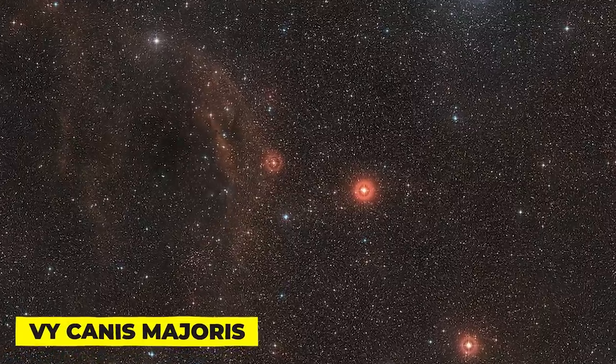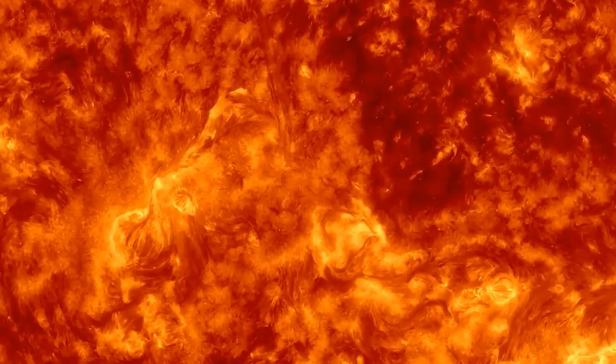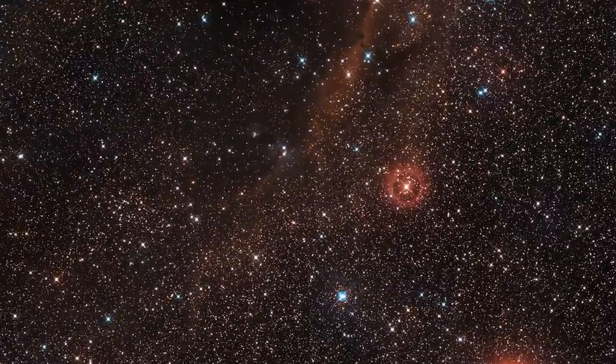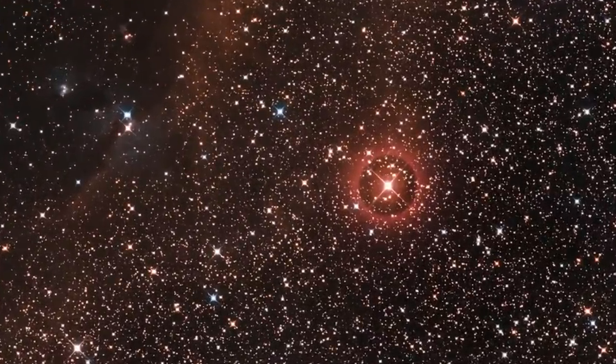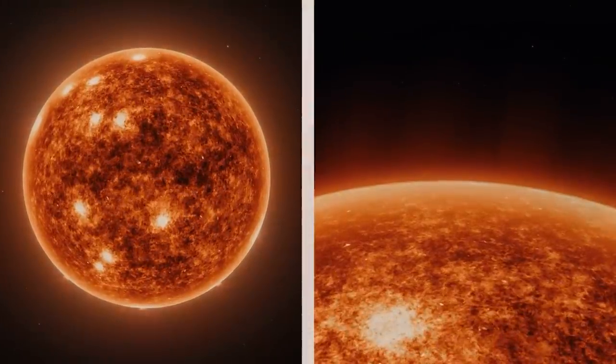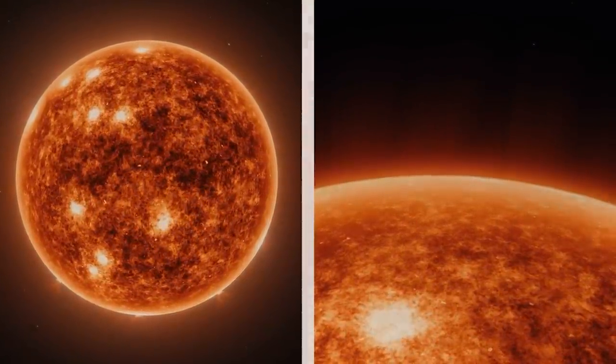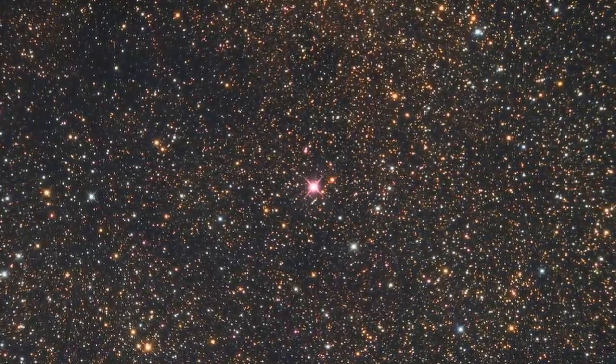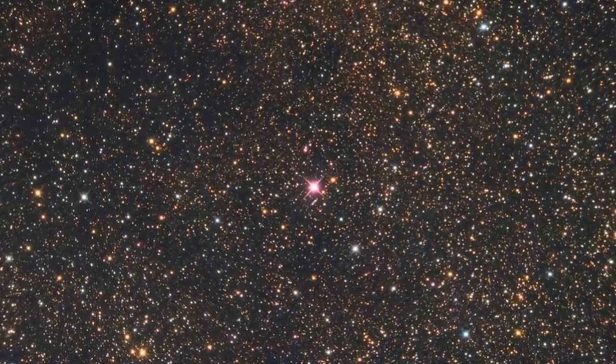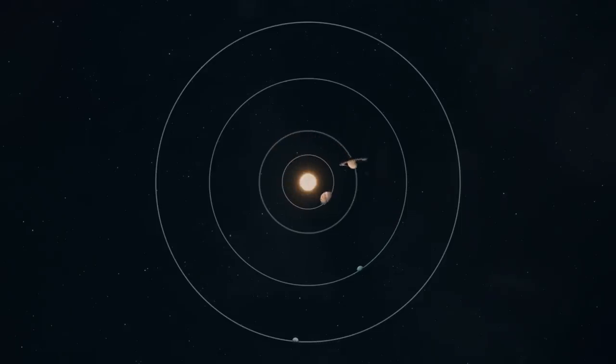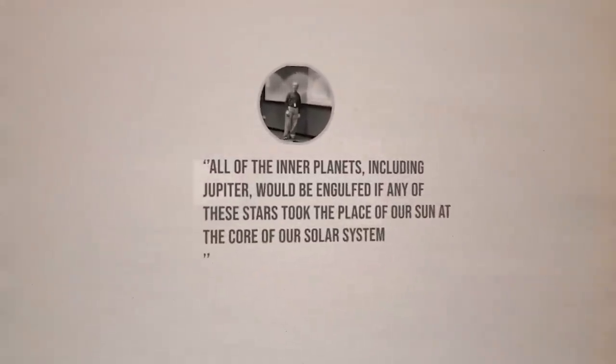Additionally, there is VY Canis Majoris, which is 8.2 million years old. Originally thought to be between 1,800 and 2,200 solar radii in size, the red hypergiant star VY Canis Majoris has since had its estimate revised down to 1,300 to 1,540 solar radii. The diameters of WOH G64 and VY Canis Majoris are both about 1,500 times larger than the Sun. Furthermore, either could surpass UY Scuti in size given the ambiguity. In either case, it is quite cool. All of the inner planets, including Jupiter, would be engulfed if any of these stars took the place of our Sun at the core of our solar system. Massey said the Earth or the inner planets would be vaporized.